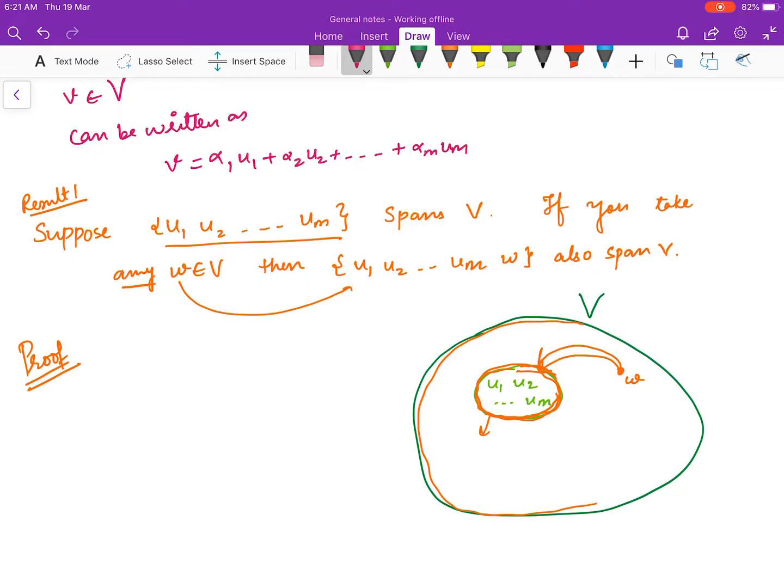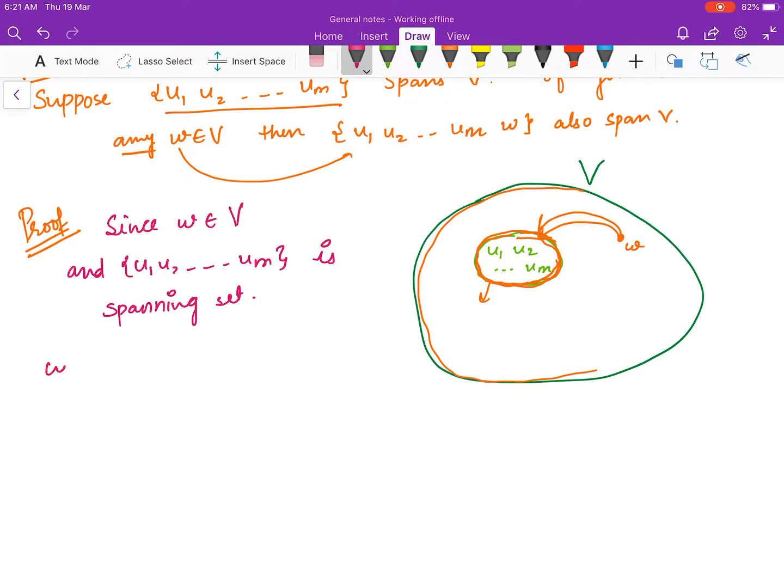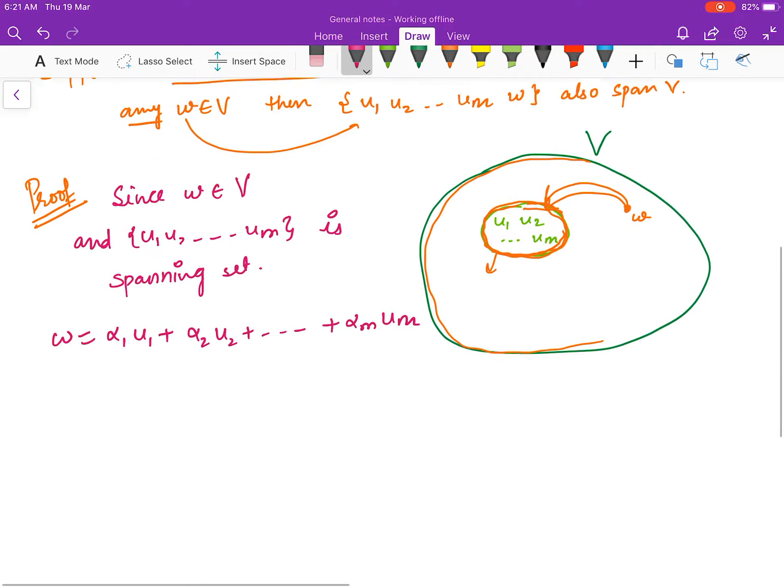Since w belongs to V and {u1, u2, ..., um} is a spanning set, it means that you can write w as a linear combination of u1, u2, ..., um.